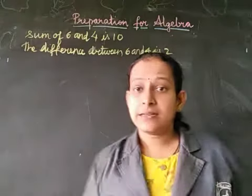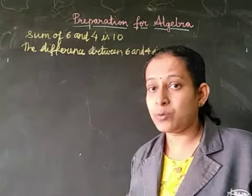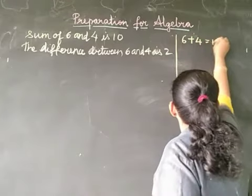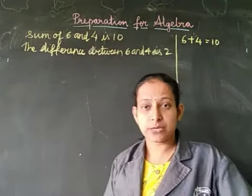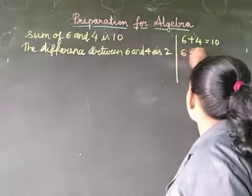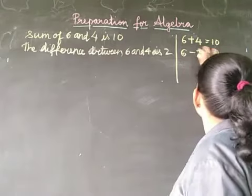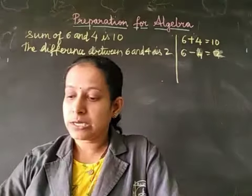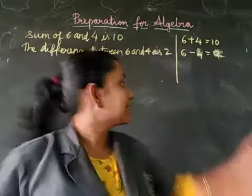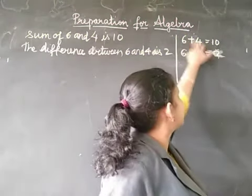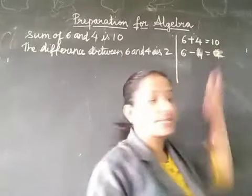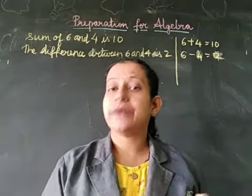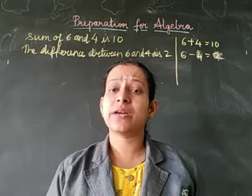This you have learned. Instead of writing them in words, we can also write this as 6 plus 4 is equal to 10, and 6 minus 4 is equal to 2. When we add or subtract numbers, we are always getting a number as the answer.